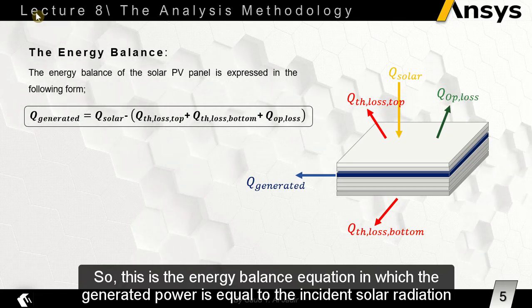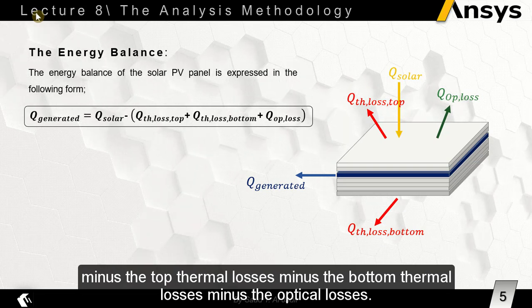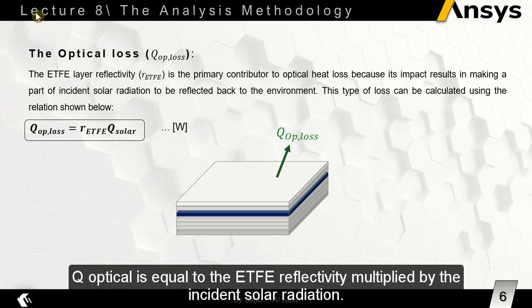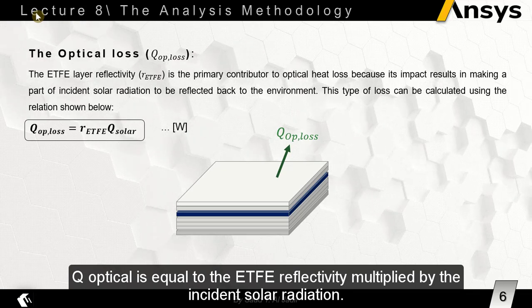This is the energy balance equation in which the generated power is equal to the incident solar radiation minus the top thermal losses minus the bottom thermal losses minus the optical losses. Q optical is equal to the ETFE reflectivity multiplied by the incident solar radiation.